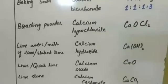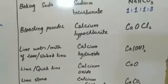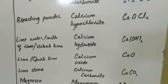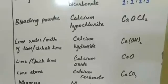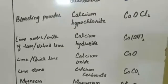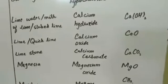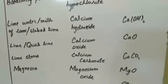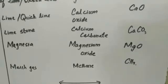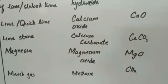Bleaching powder is calcium hypochlorite, formula CaOCl2. Lime water or milk of lime is calcium hydroxide, Ca(OH)2. Lime or quick lime is calcium oxide, CaO. Limestone is calcium carbonate, CaCO3. Magnesia is magnesium oxide, MgO — just as calcium oxide is called lime, magnesium oxide is called magnesia. Finally, the gas used for domestic purposes is methane, formula CH4.